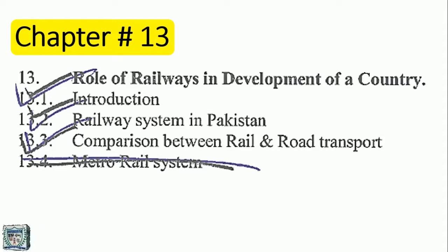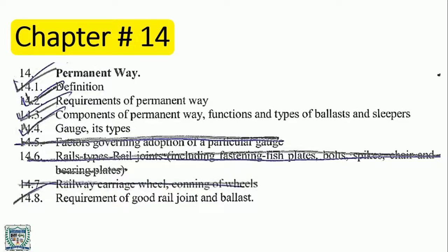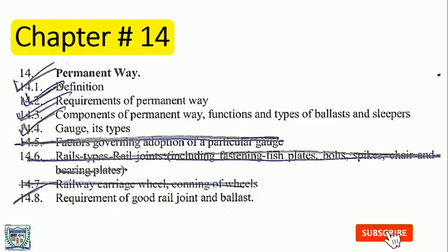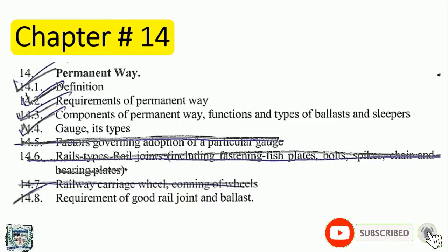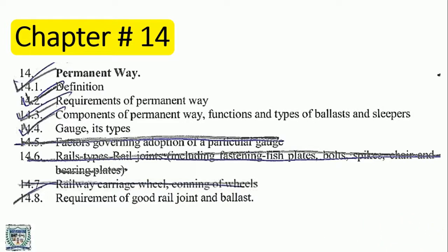Chapter 13: Role of railways in development of a country, including metro rail system. Chapter 14: Permanent Way — factors governing adoption of a particular gauge, types of rails, rail joints, fish plates, and bearing plates.